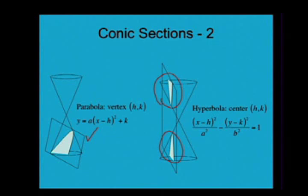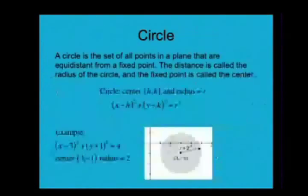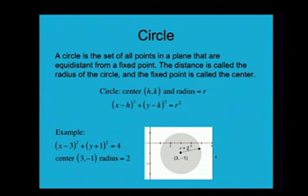Let's look more closely at the circle. A circle is the set of all points in a plane that are equidistant from a fixed point. The distance is called the radius of the circle and the fixed point is called the center. The circle then has a center of (h, k) and a radius r will have the equation (x - h)² + (y - k)² = r².